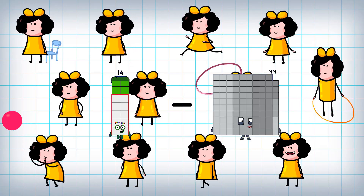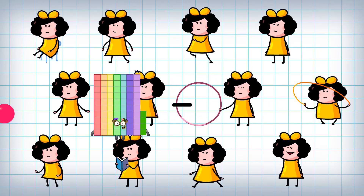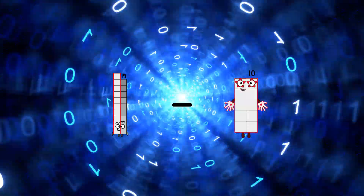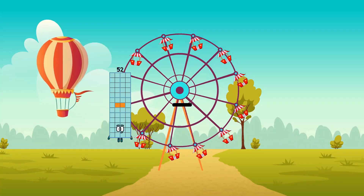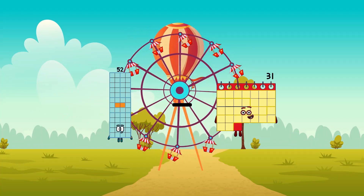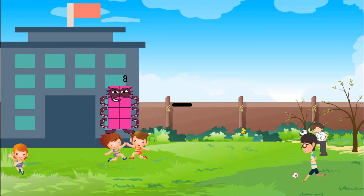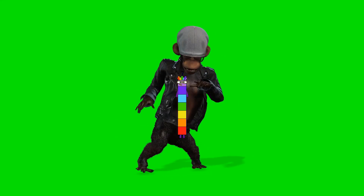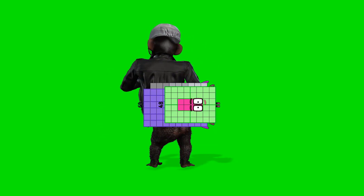14 minus 6 equals 8. 19 minus 10 equals 9. 52 minus 31 equals 21. 8 minus 1 equals 7. 69 minus 48 equals 21.